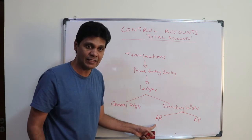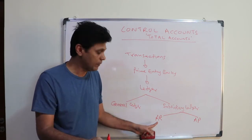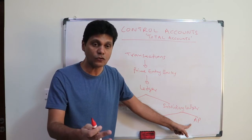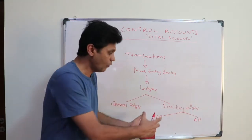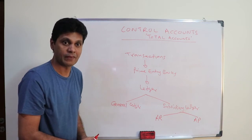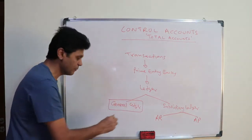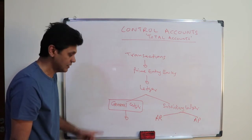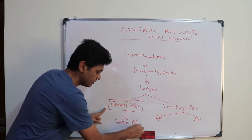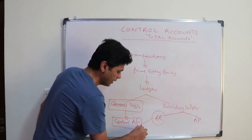The subsidiary ledger is divided into two parts: the accounts receivable ledger, which maintains all individual customer accounts, and the accounts payable ledger, which maintains all supplier accounts. To control these groups of accounts, we use a control account in the general ledger.